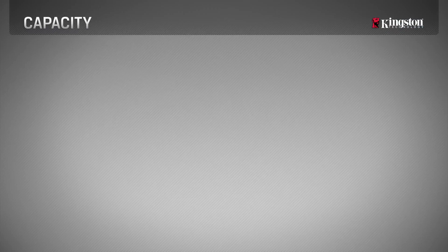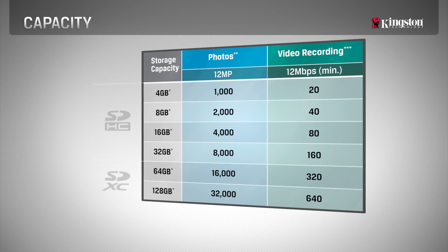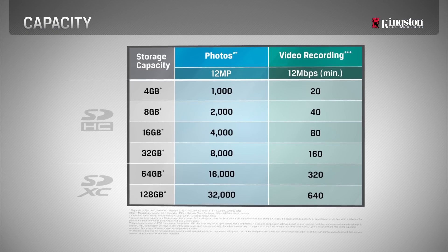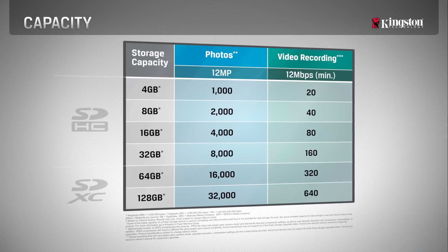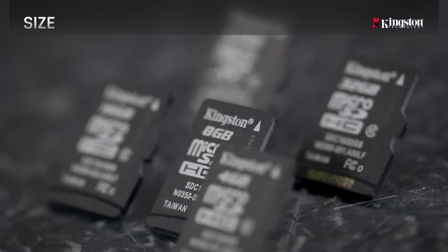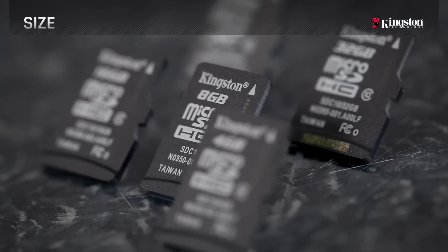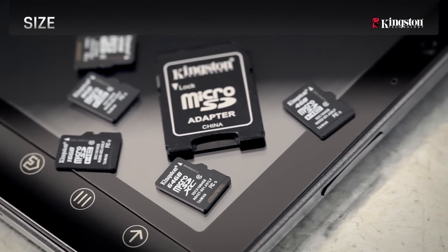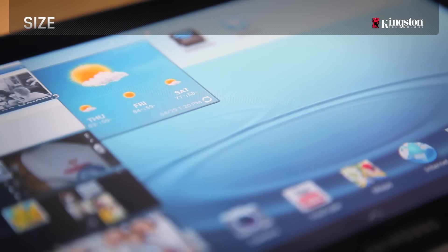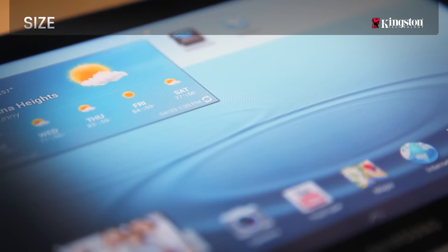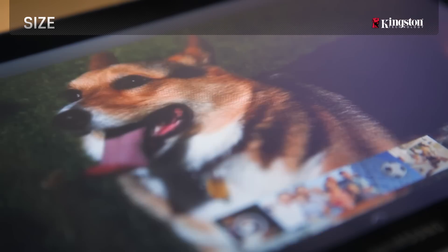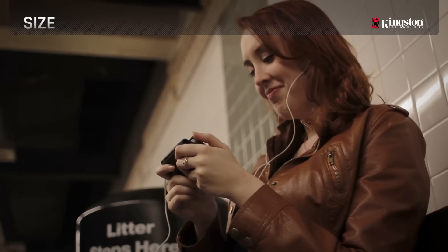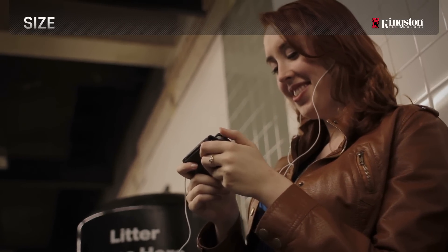Higher resolution cameras, or those that shoot video, need lots of space, and higher capacity cards fill that need, as you can see here. Micro SD cards are like SD cards but in a smaller format. While SD cards can handle higher resolution photos and videos, Micro SD cards are used to store music, video, photos, applications, and documents in digital devices such as tablets and smartphones.